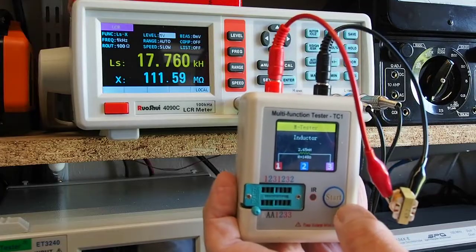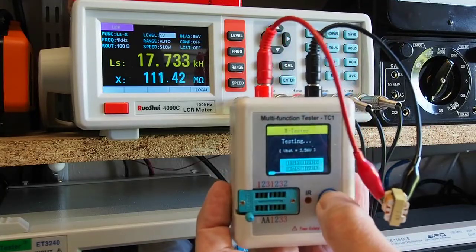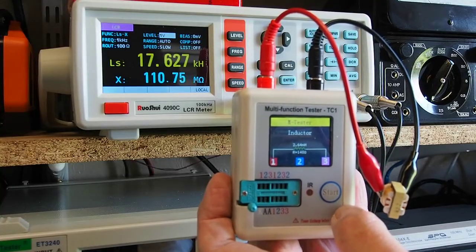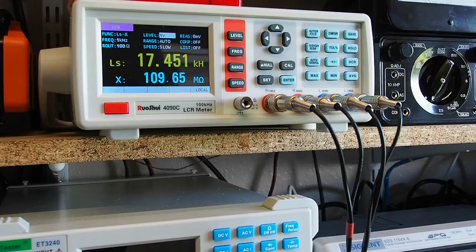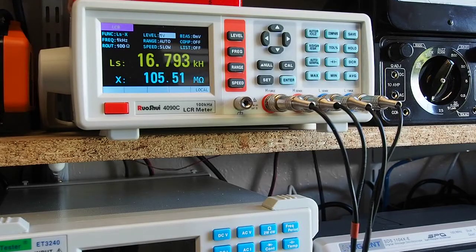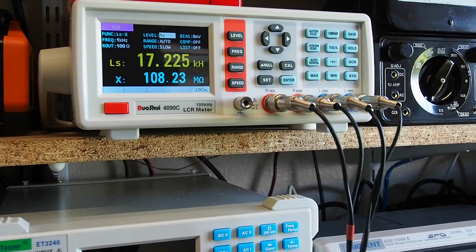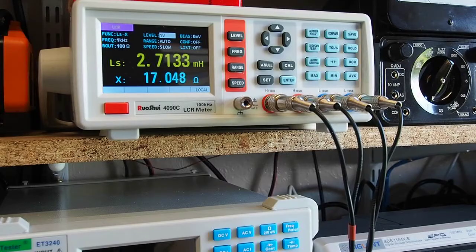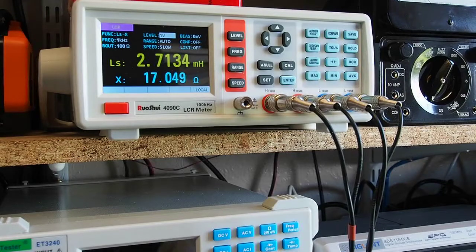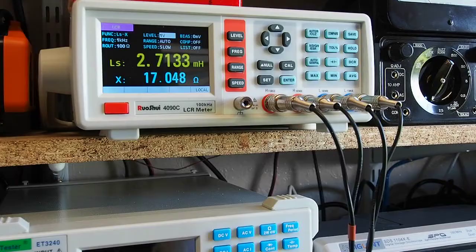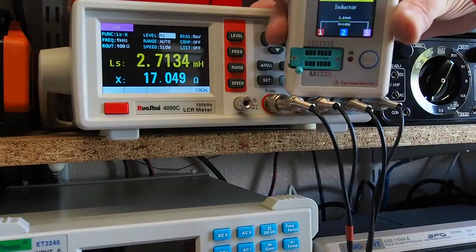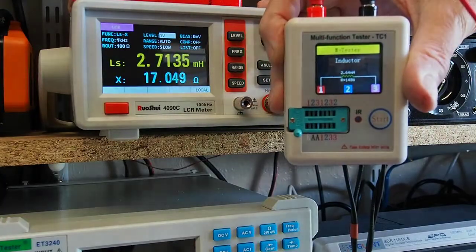2.65 millihenries. Let's just do that again. Yeah 2.64 millihenries okay. Let's get on the LCR meter again, I suspect you're going to get the answer in microhenries on here. So it was, oh no it's going to give me the answer in millihenries. There you go it was 2.64, 2.71. Yep I reckon that's pretty good. So once again I think the TC1's a winner for inductance as well which is always a difficult thing to measure I feel.